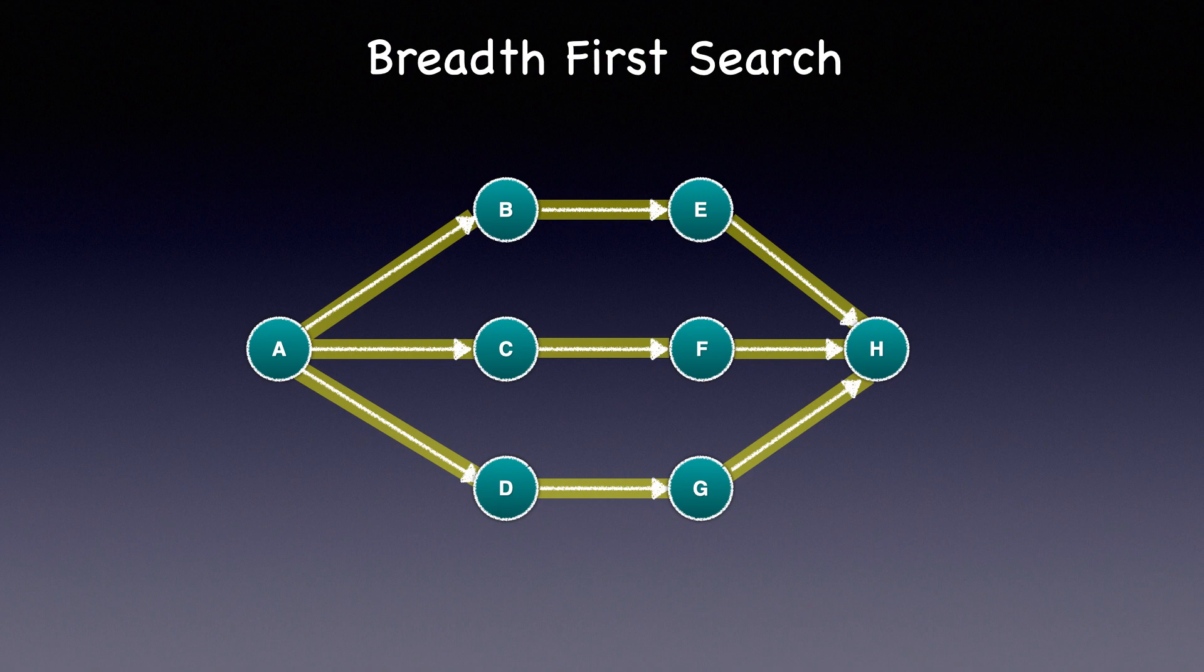Depth first search is mostly implemented using recursion whereas a breadth first search is implemented using a queue data structure. The obvious question here is when do we use a breadth first versus a depth first search. Breadth first search is often used to find the shortest path. That's because breadth first search is guaranteed to find the shortest path in an unweighted graph.